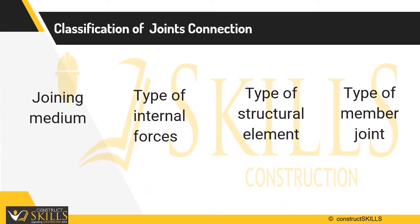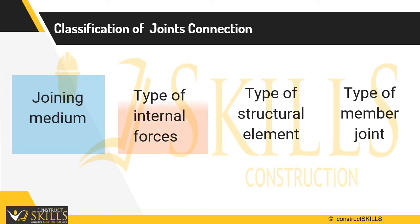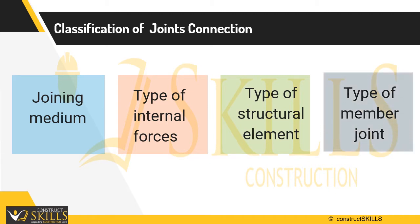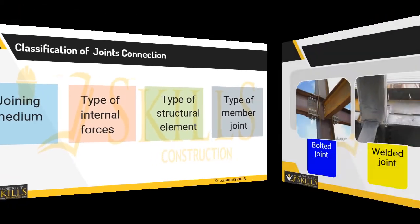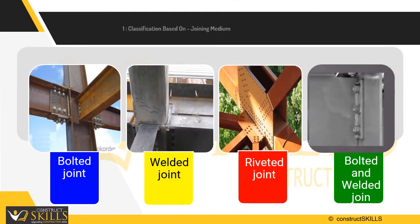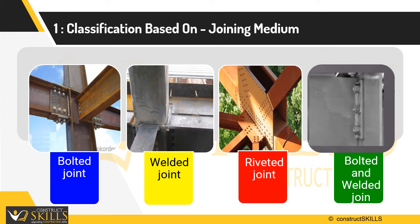Types of steel connections and their classification are based on four categories: connecting medium; type of internal forces the connection transmits; type of structural elements that make up connections; and type of members being joined. Classification on the basis of joining medium includes bolted joints, welded joints, riveted joints, and a combination of bolted and welded joints.